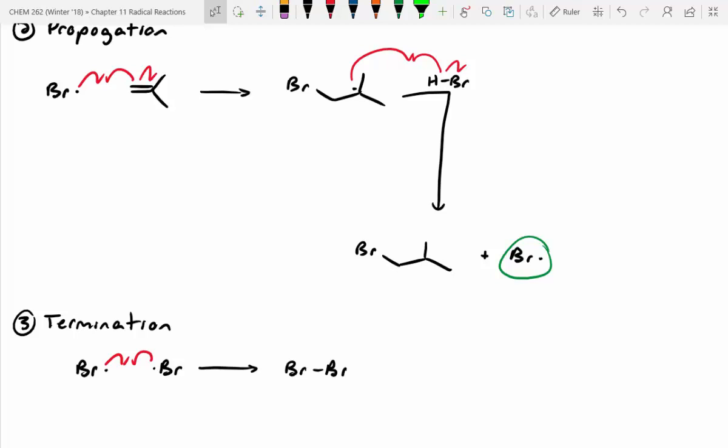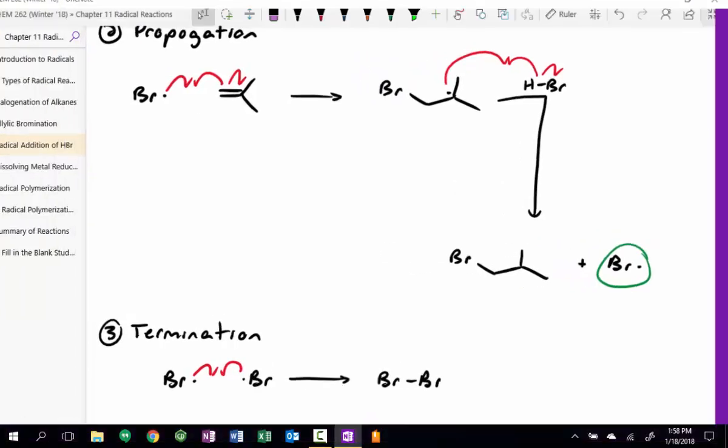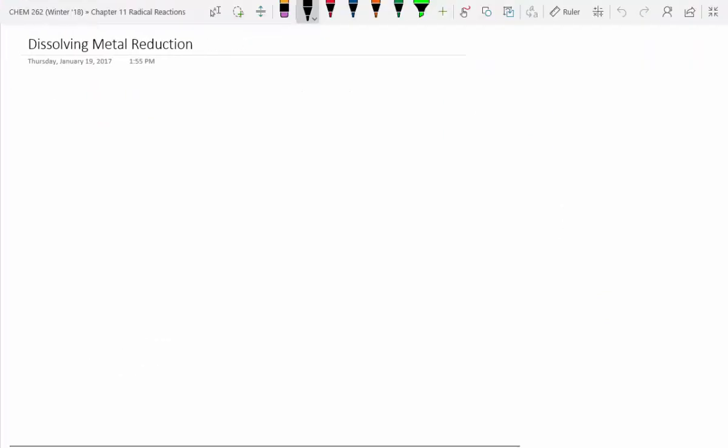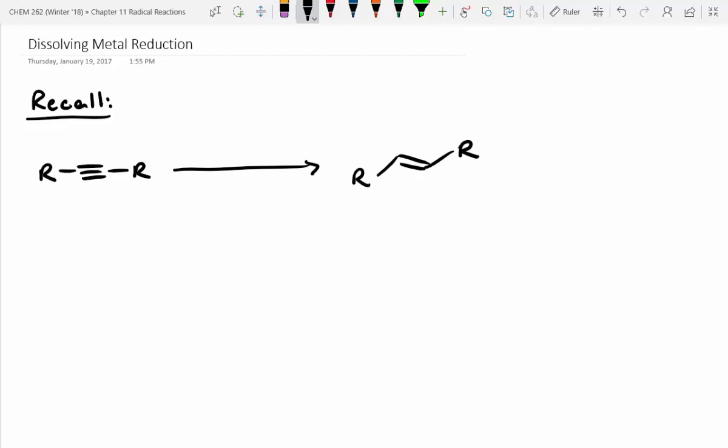We have one more reaction we want to cover today. And this was also one we've seen before, but we actually skipped over the mechanism, so I'm doing this kind of out of order. And this was the dissolving metal reduction that we saw in Chapter 10. And we saw in Chapter 10 that you can reduce an alkyne into a trans alkene using a special set of reagents. Does anybody remember what those are? Sodium metal. Yeah, it's not Lindlar's. Lindlar's, we know that would give us cis. We said sodium metal and what solvent? Ammonia. And this is liquid ammonia.